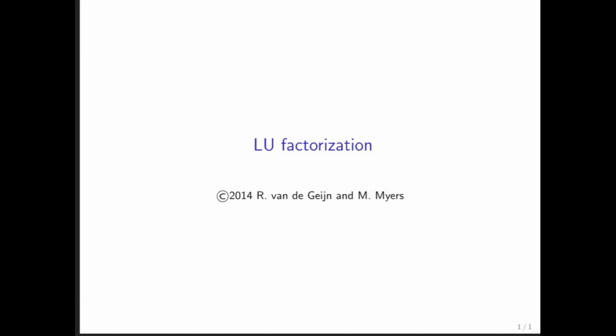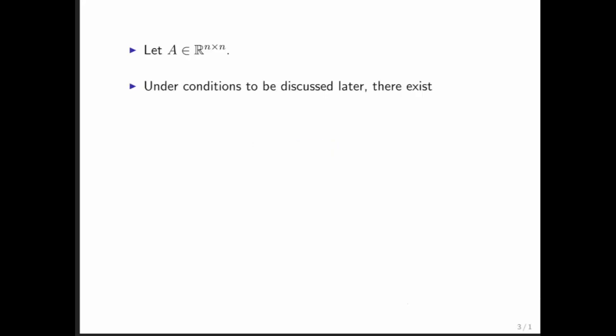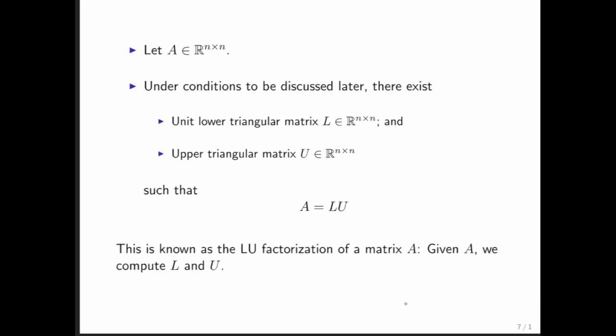We're now going to look at the problem of solving Ax equals b a little bit differently. We're instead going to look at it starting with a matrix A and computing what's called an LU factorization of it. So if you start with matrix A, then under some mild conditions, there exists a lower triangular matrix L, actually a unit lower triangular matrix L, and an upper triangular matrix U, so that A can actually be written as the product of matrix L with matrix U. This is known as an LU factorization of a given matrix A.